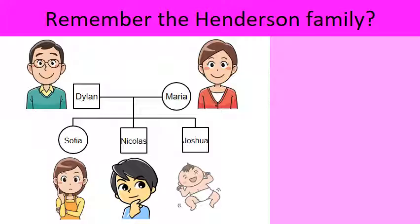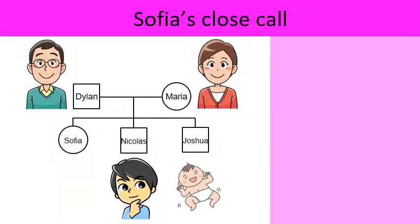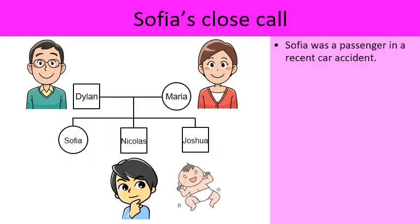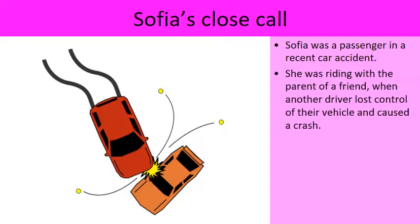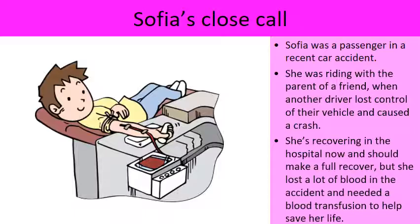So if you watched my other videos, we've been learning about genetic problems with this fictional family, the Henderson family. We're here today because their six-year-old daughter Sophia has had a close call. She was a passenger in a recent car accident, riding with the parents of a friend when another driver lost control and caused a crash.